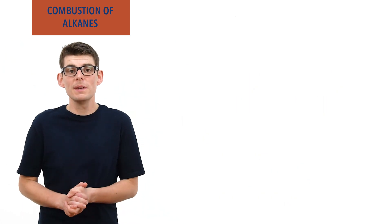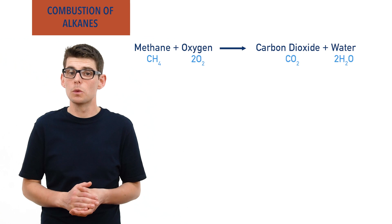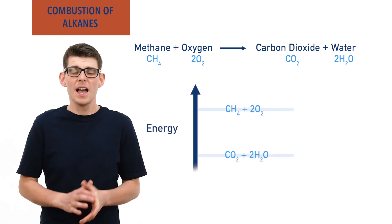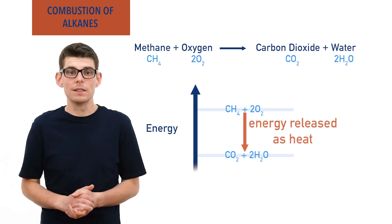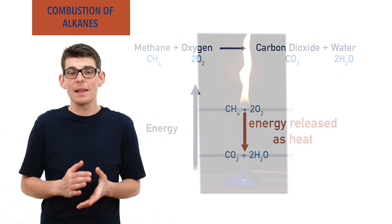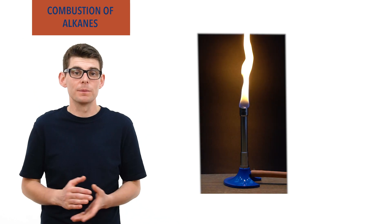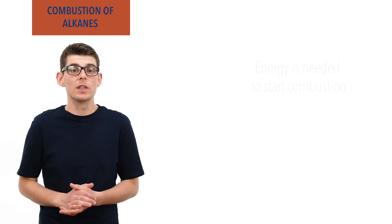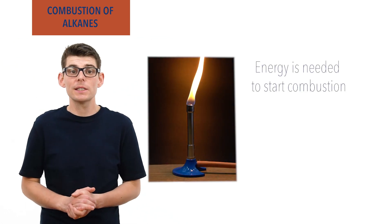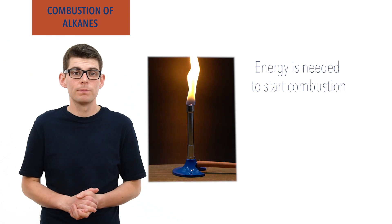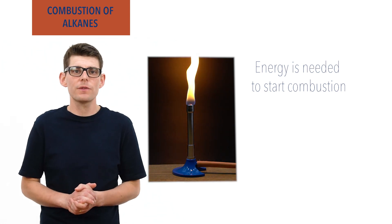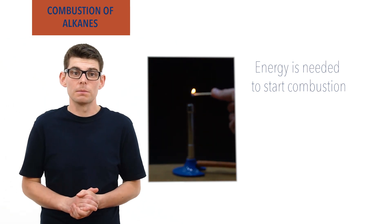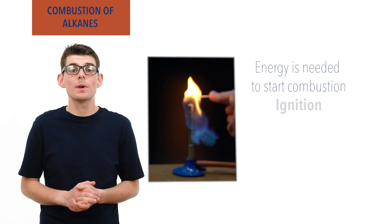For example, when methane gets combusted, the carbon dioxide and water produced are lower in energy than the original methane and oxygen, and large amounts of energy get released, as seen when you use a Bunsen burner and burn methane gas to heat something up. To get a combustion reaction to start, energy is needed — this is why you need a lit splint to light a Bunsen burner. The small flame of the splint gives just enough energy to kick-start the combustion. Giving this energy and starting the combustion process is referred to as ignition.